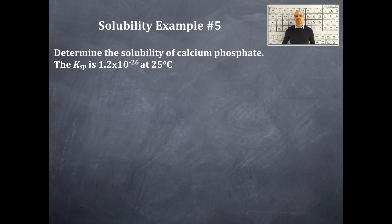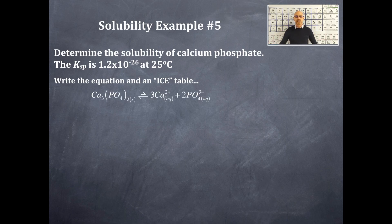KSP values are temperature dependent, therefore I always need to include that temperature. We're going to write the equation and do an ICE table. Calcium phosphate is Ca3(PO4)2. That's an insoluble precipitate as most phosphates are, and that's a solid. That equilibrium arrow lies predominantly on the reactant side as the Ksp value of times 10 to the negative 26 indicates that it is an insoluble precipitate and it is reactant favored. On the product side I have three calcium ions aqueous plus two phosphate ions aqueous.